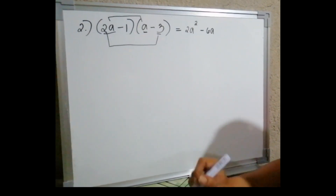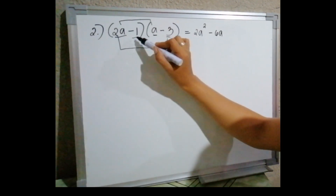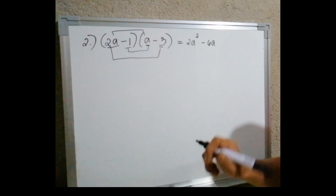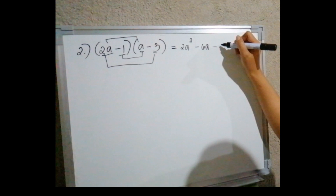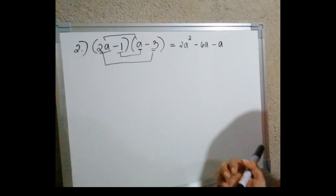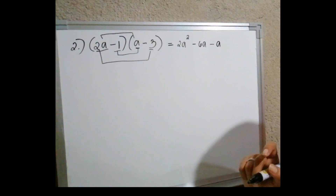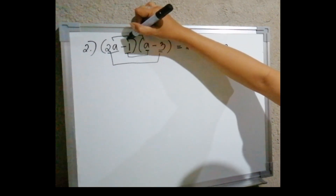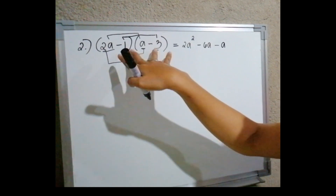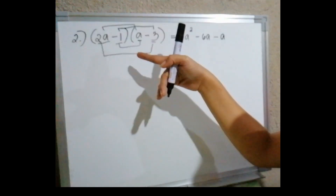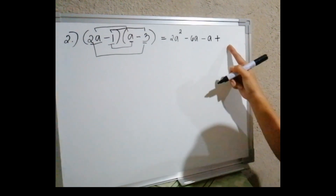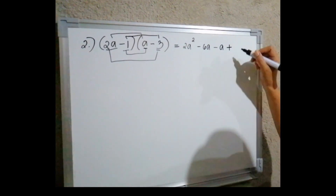Next, we have the inner term: negative 1 times a. They have different signs, so the result is negative. Negative 1a is just equal to negative a. Lastly, the last term: negative 1 times negative 3. They have the same sign, so negative times negative is positive. Therefore, positive 1 times 3 is equal to positive 3.